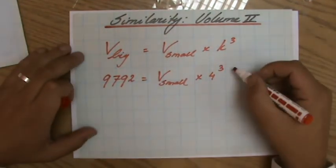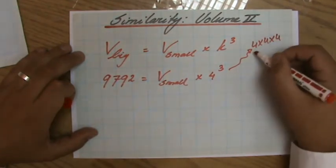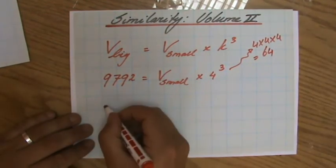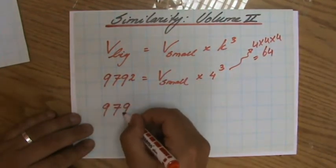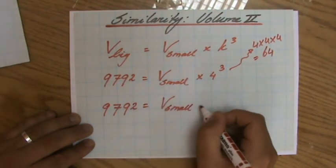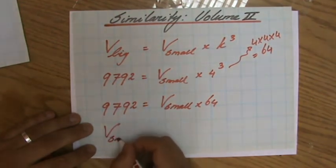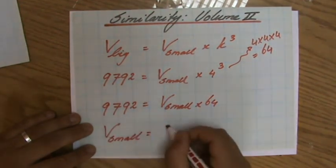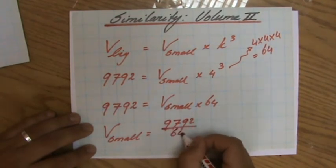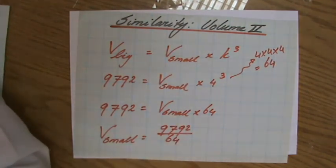And that is not 12. 4 to the power 3 is not 12, please. It's 4 times 4 times 4: 16 times 4 is 64. So the equation becomes 9,792 equals the volume of the small cuboid times 64.